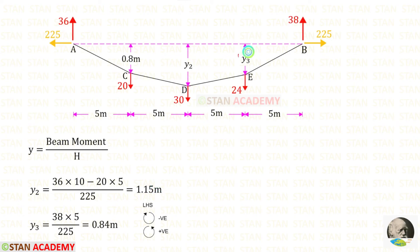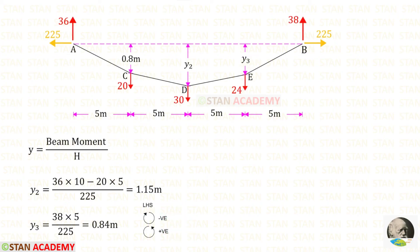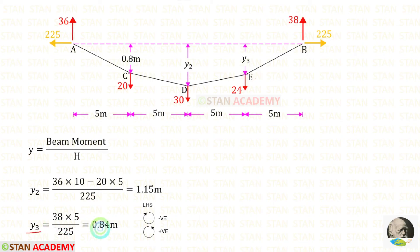Now let us find Y3. To find Y3, let us find the beam moment from point B, as that will be easier. We have to use the left-hand side rule — clockwise will be negative and anticlockwise will be positive. Up to point E, we have only the vertical reaction of 38, which is acting in the anticlockwise direction — positive — with a distance of 5. Finally, for Y3 we will get 0.84 meters.